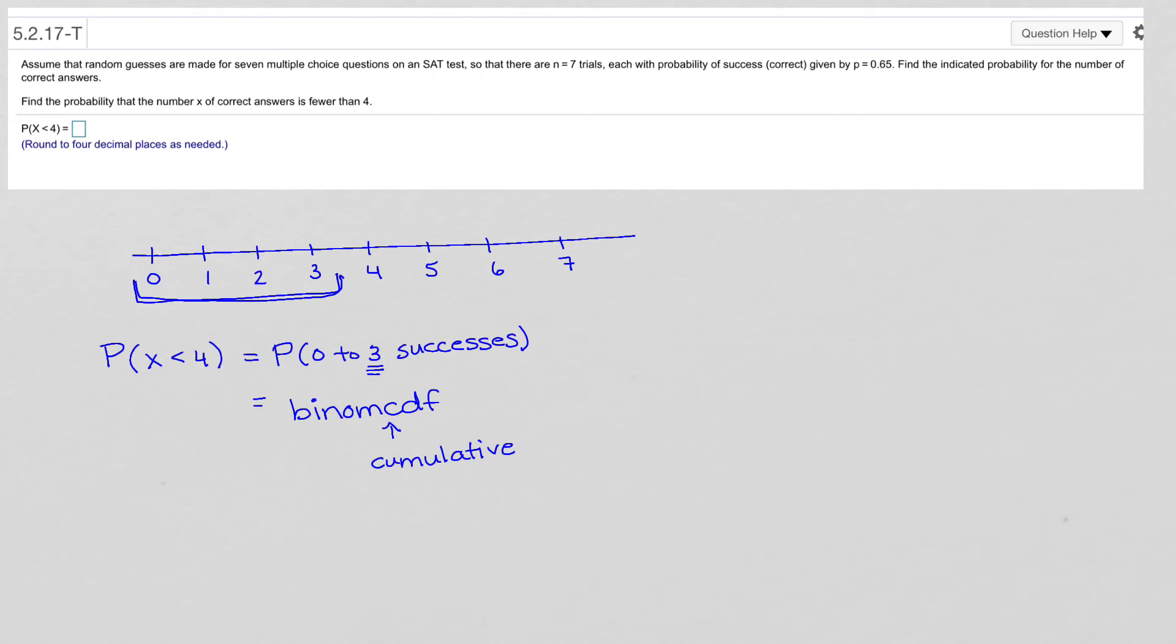So we're doing binom CDF, and you can find this in your calculator by pressing second and the vars key, variables key. And you can scroll either up or down until you get to that binom CDF.